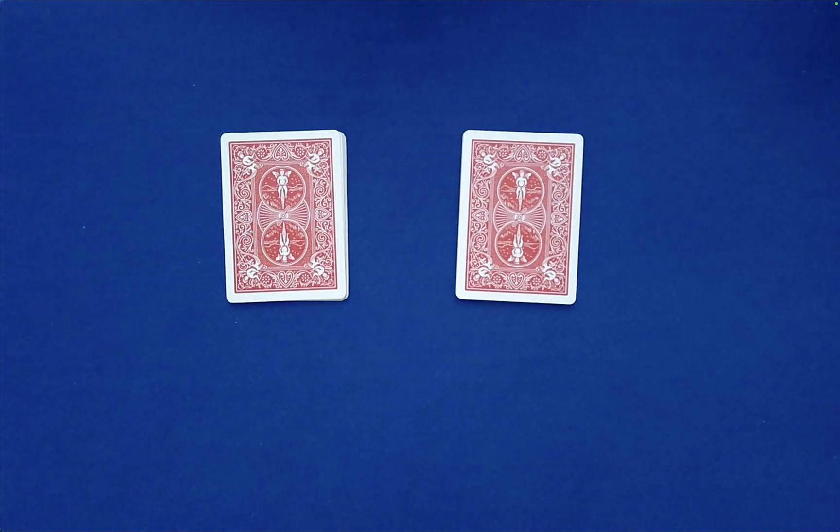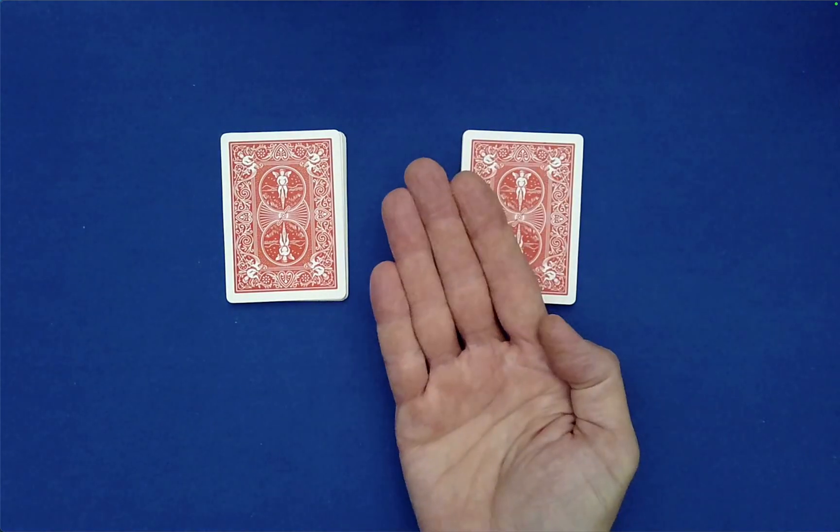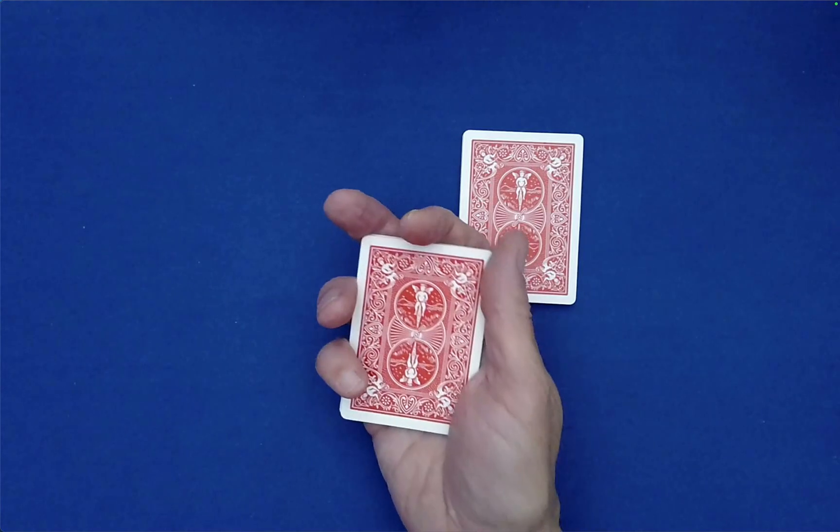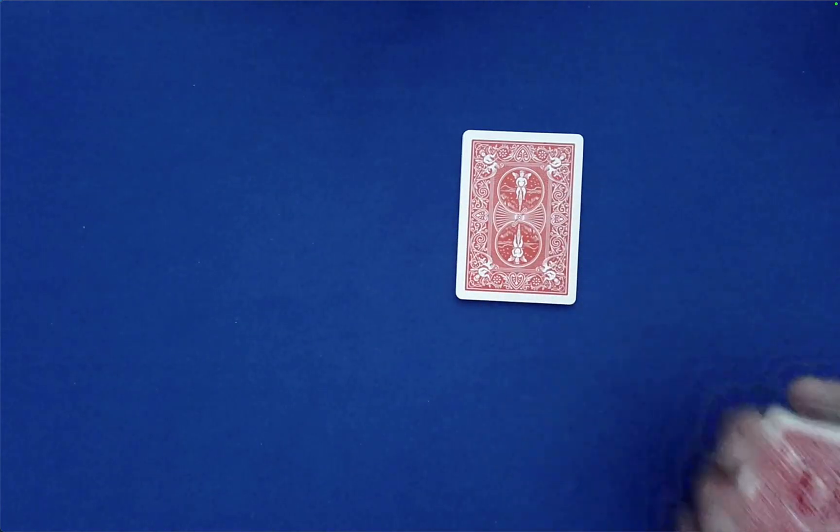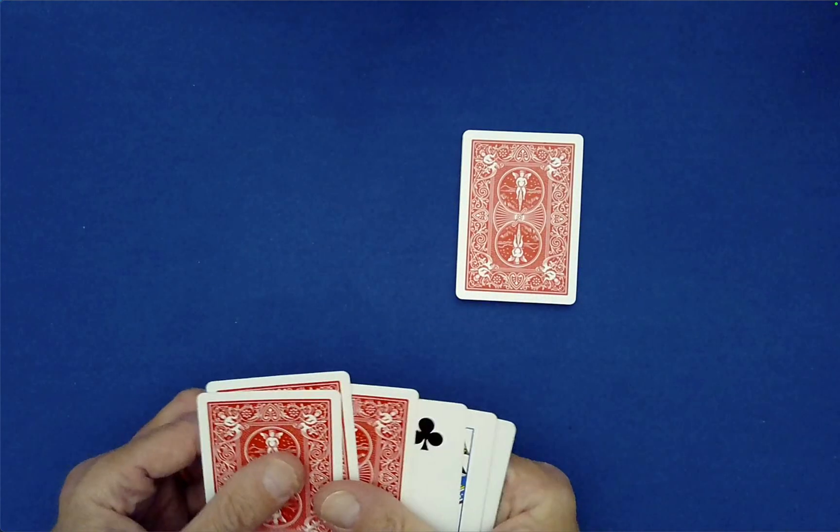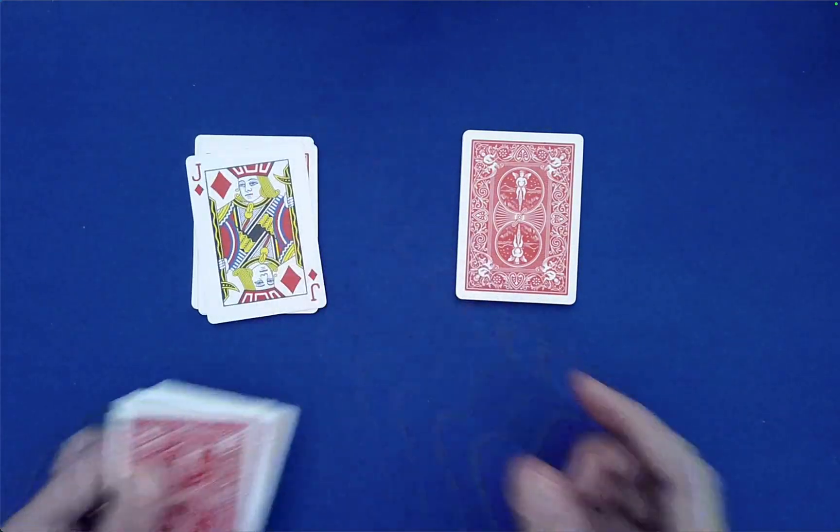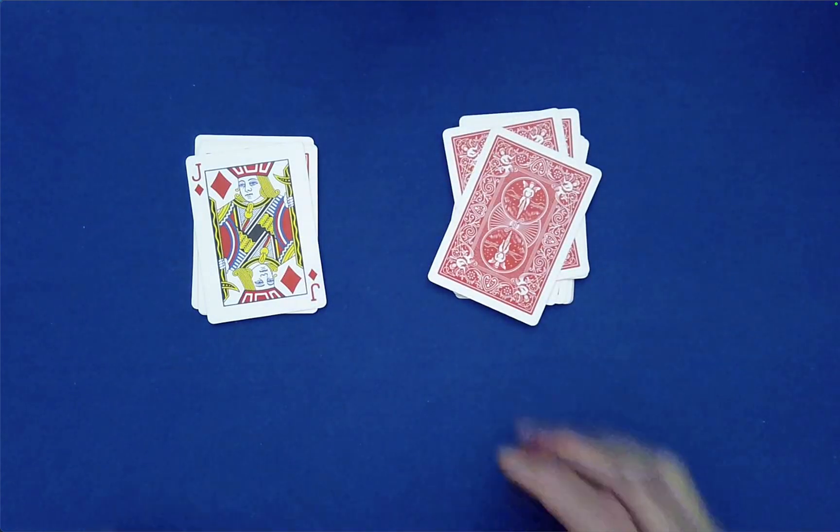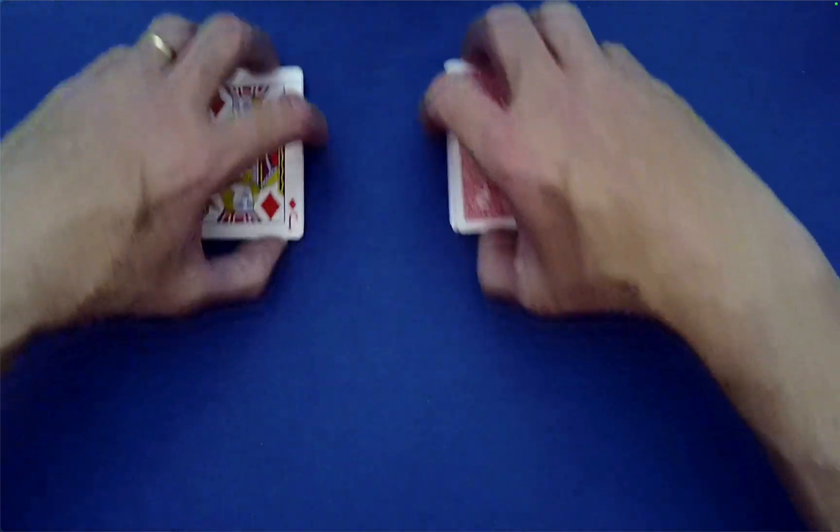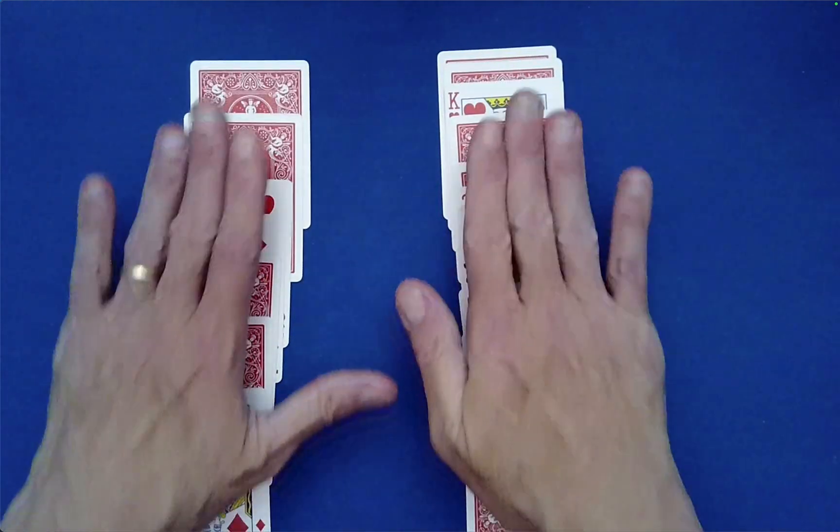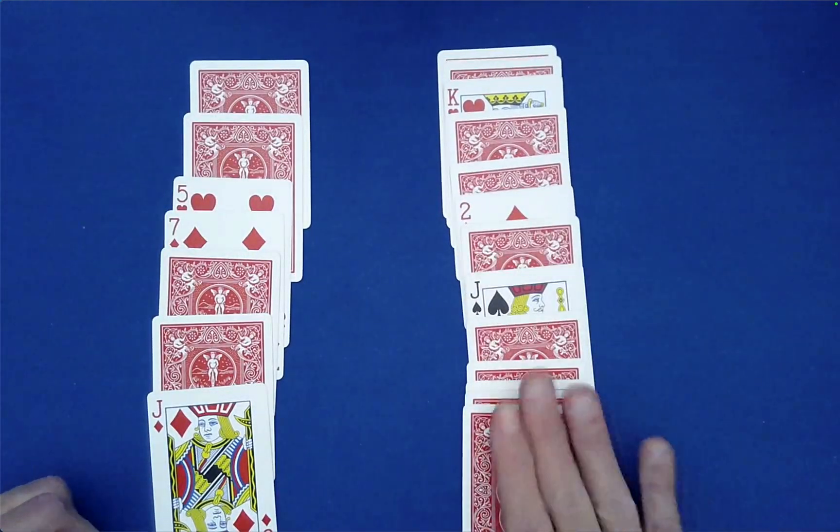So at this point, you as the performer could turn around, face the spectator, maybe with your eyes closed still, have them place one of the packets of 10 in your hand. And then you take these behind your back, you push off the top three, leave them as is, flip the other seven, and then turn around, set these down there and those there.